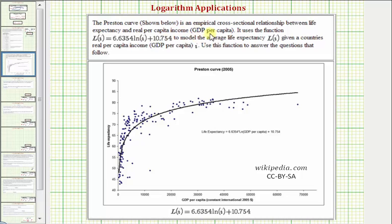The Preston curve shown below is an empirical cross-sectional relationship between life expectancy and real per capita income, also known as GDP per capita. It uses the function L(I) = 6.6354 ln(I) + 10.754 to model the average life expectancy L(I) given a country's real per capita income I.